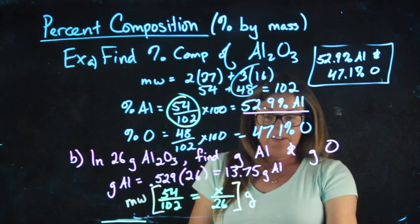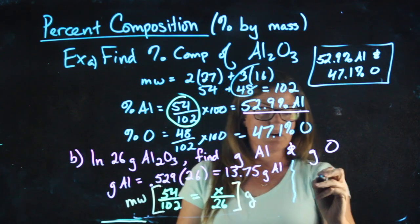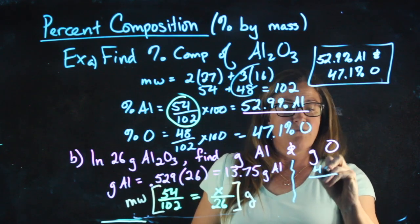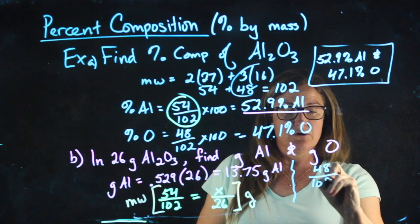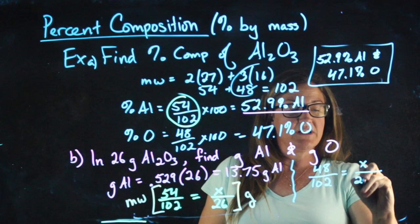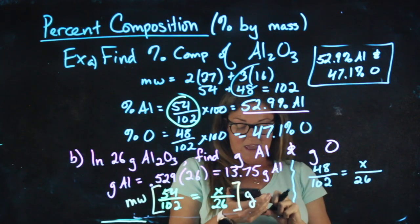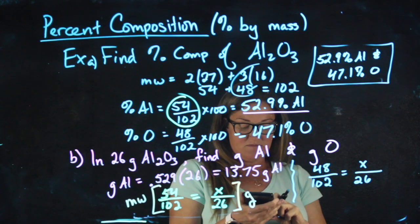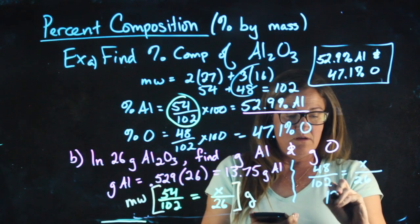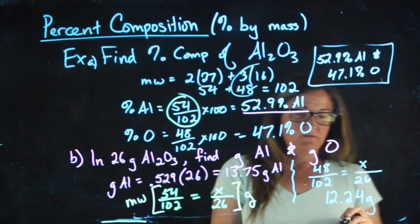If I wanted to find the grams of oxygen, I'm going to approach it a similar way. 48 out of every 102 is oxygen. So how much out of 26 grams? 48 divided by 102 times 26 gives me 12.24 grams.